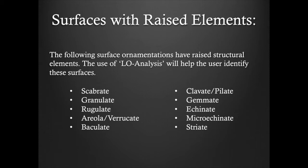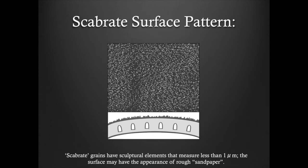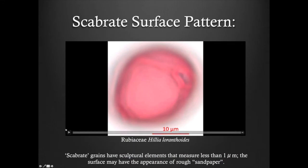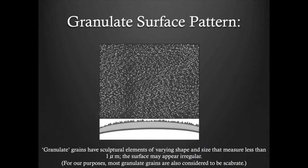The use of LO analysis will help the user identify these surfaces. Scabrate grains have sculptural elements that measure less than one micrometer. The surface may have the appearance of rough sandpaper. Granulate grains have sculptural elements of varying shape and size that also measure less than one micrometer. The surface may appear irregular. For our purposes, most granulate grains are also considered to be scabrate.